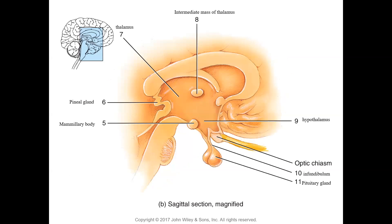In Figure 20.4b, a sagittal section model magnified through the diencephalon: number five shows the mammary body, number six is the pineal gland as part of the epithalamus, this is the thalamus with the intermediate mass, and here is the hypothalamus. The infundibulum goes down to the pituitary gland with anterior and posterior portions. The optic chiasm is where the optic nerves from the right and left cross over.